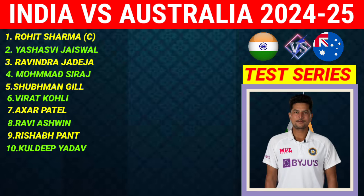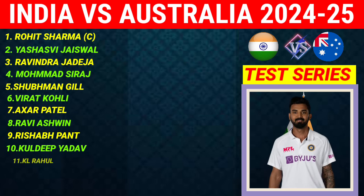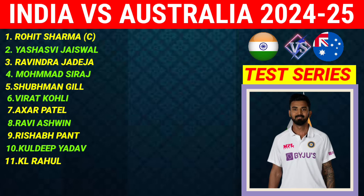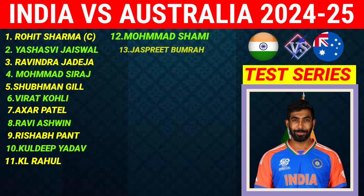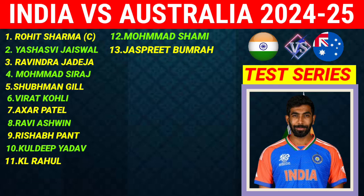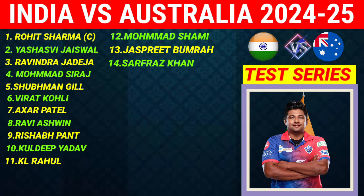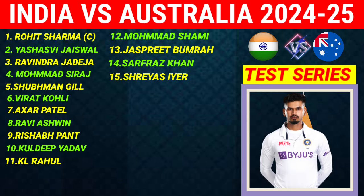Number 10: Kuldeep Yadav — Left Hand Leg Spinner. Number 11: KL Rahul — Right Hand Wicket Keeper Batsman. Number 12: Mohammed Shami — Right Hand Fast Bowler. Number 13: Jasprit Bumrah — Right Hand Fast Bowler. Number 14: Sarfaraz Khan — Right Hand Middle Order Batsman. Number 15: Suresh Iyer — Right Handed Batsman.